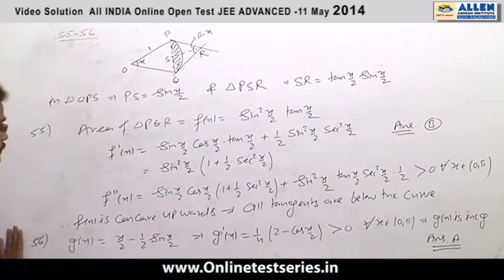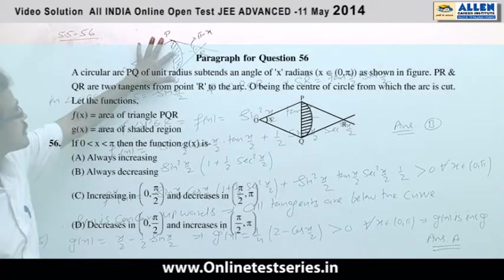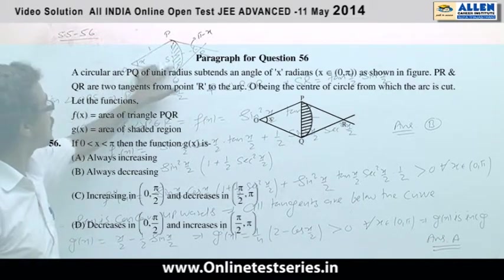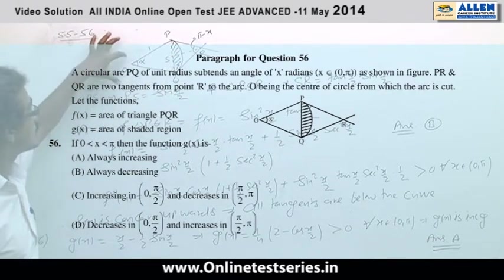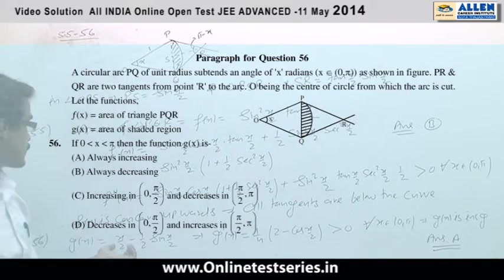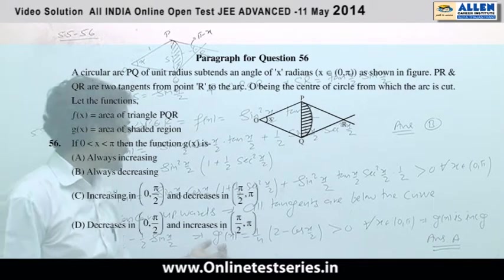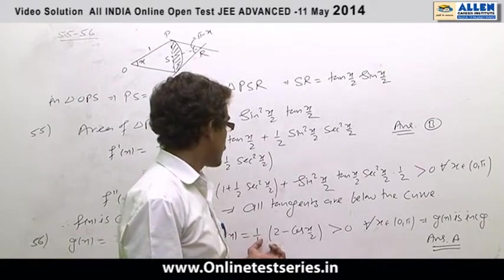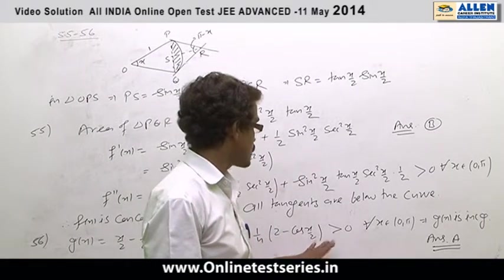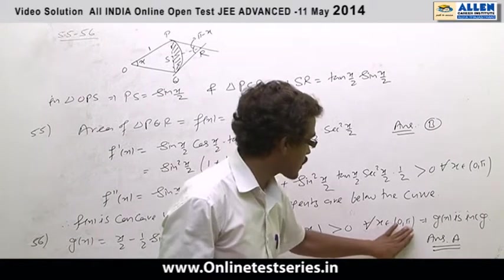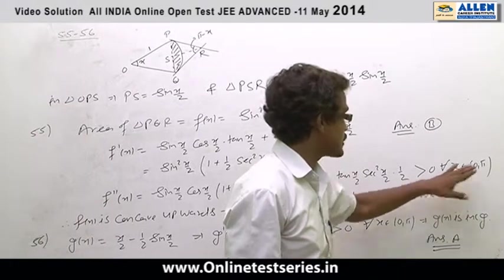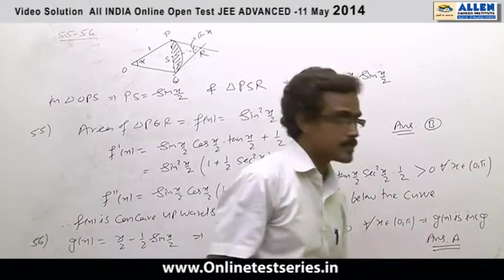In question number 56, area of this shaded region equals g(x), which equals x by 2 minus half sin x by 2. After differentiating g(x), we find 1 by 4 times 2 minus cos x by 2, which is always positive for x belonging to 0 to pi. It means g(x) is an increasing function in this interval. So option A is correct.